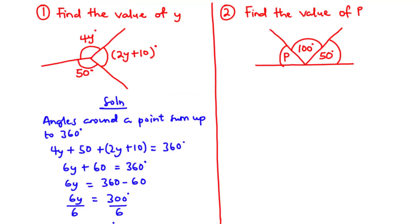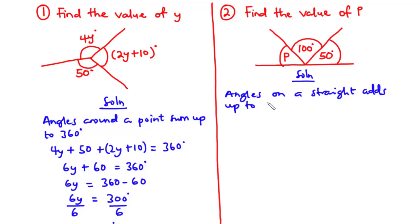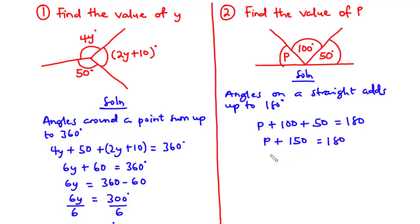Now for example 2, we have a straight line. We know that angles on a straight line add up to 180 degrees. Therefore, P plus 100 plus 50 equals 180. So P plus 150 equals 180. Transposing 150 to the right-hand side, we have the value of P to be 30 degrees.